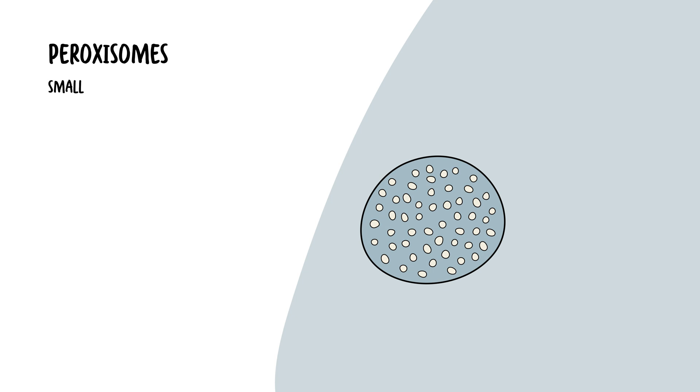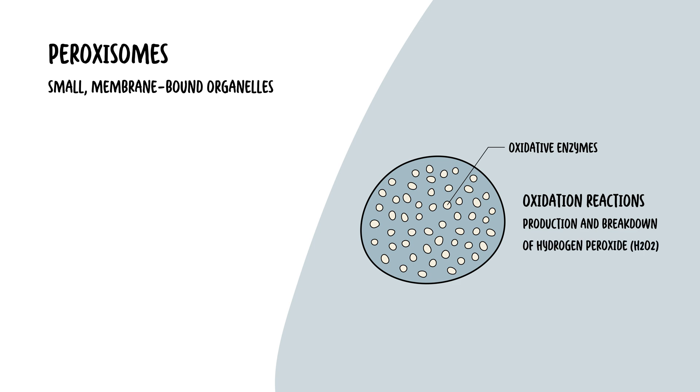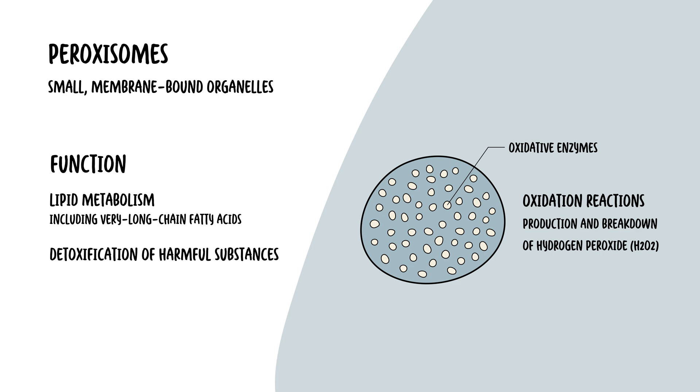Then you have these things called peroxisomes. Peroxisomes are small, membrane-bound organelles containing oxidative enzymes. They are very similar to lysosomes. These are found in eukaryotic organisms. Peroxisomes, unlike lysosomes, they carry out oxidative reactions, leading to the production and breakdown of hydrogen peroxide. They are involved in lipid metabolism, including the breakdown of very long-chain fatty acids, and the detoxification of harmful substances.